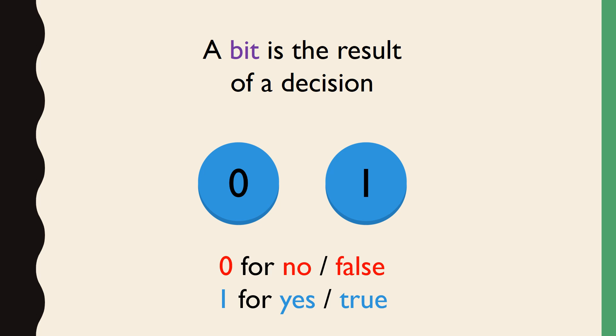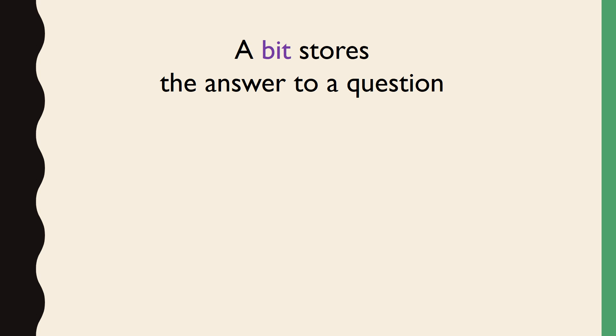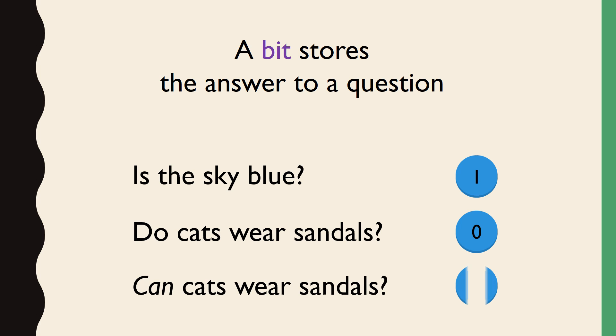Since we have only two possibilities for values to store on a single bit, we have to reduce all questions to yes-no form to store the answers. Instead of asking, what color is this object, for example, we need to ask, is this object red, is this object green, or is this object blue? The answers to those questions are either yes or no, true or false. This means that a bit also stores the answer to a question. Is the sky blue? Yes. Do cats wear sandals? No. Can cats wear sandals? Yes.